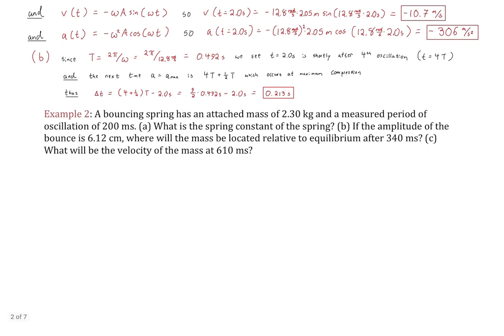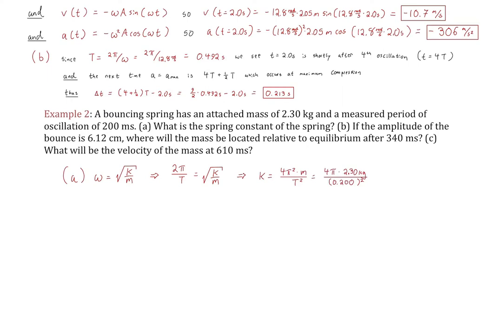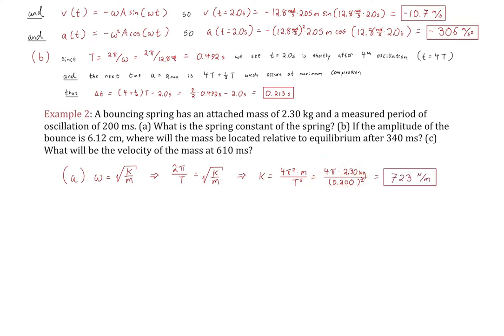Example 2: A bouncing spring has an attached mass of 2.3 kg and a measured period of 200 milliseconds. What is the spring constant? We use ω = √(k/m) and substitute ω = 2π/T. Squaring and solving for k: k = m(2π/T)² = 723 N/m.